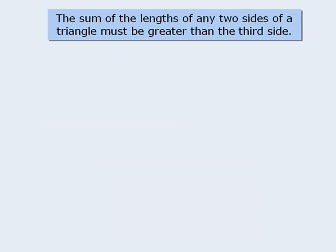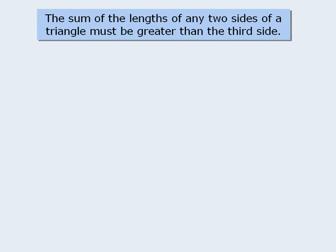Here's another important triangle property. The sum of the lengths of any two sides of a triangle must be greater than the third side. Let's explore this rule by trying to create a triangle that breaks this rule. We will try to create a triangle with sides that have lengths 1, 2, and 4. Notice that if we take the lengths of 1 and 2, we can see that their sum is less than the length of the third side. The rule states that the sum of any two sides must be greater than the third side, so it should be impossible to create a triangle with these three lengths.